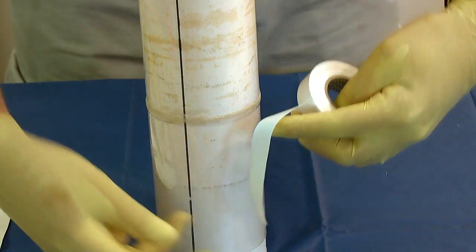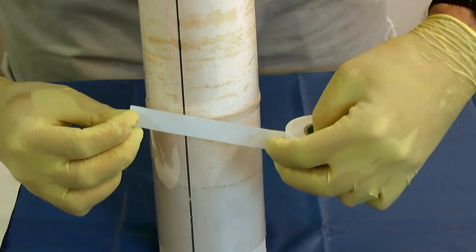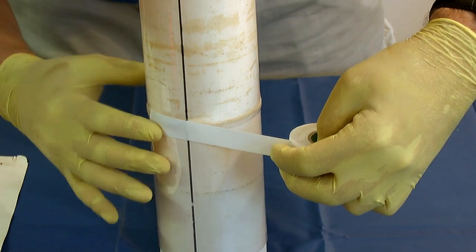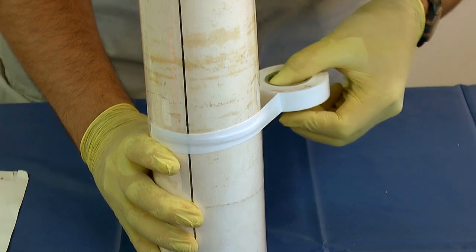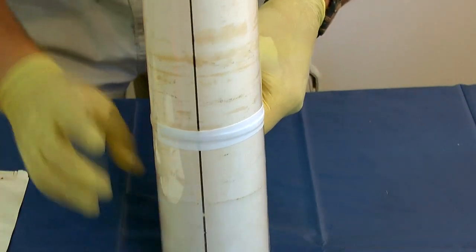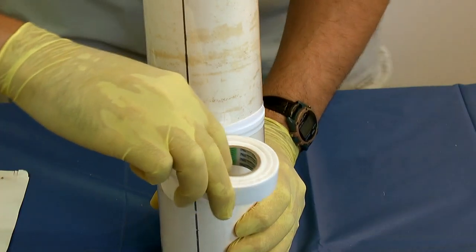Next, get some electrical tape and run it over the seam. That just helps keep it in place while the glue dries.